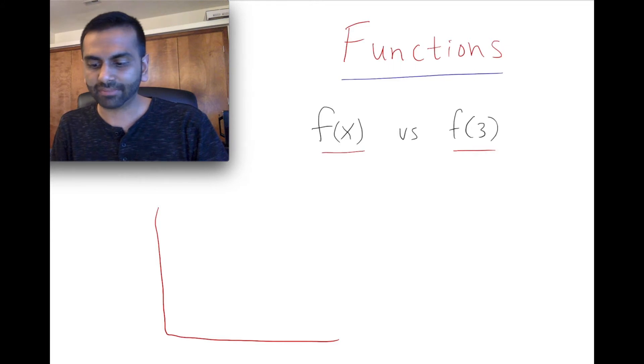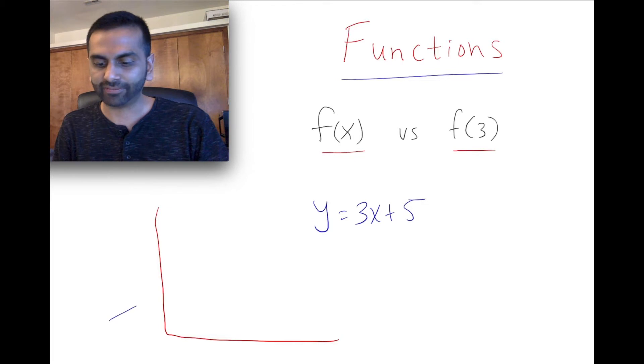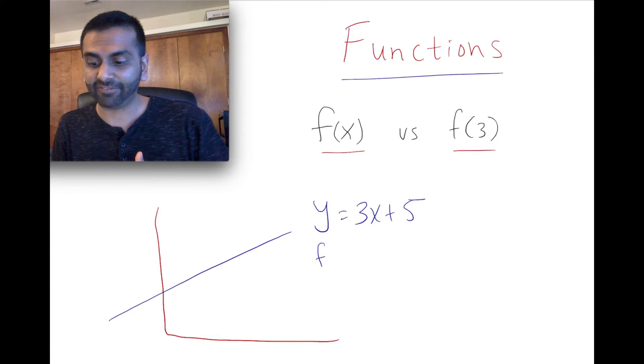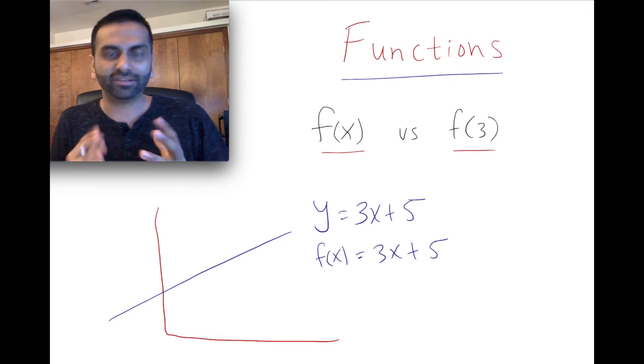When we had something like y equals 3x plus 5, and the graph looked like this, instead of y equals 3x plus 5, we could write it as f(x) equals 3x plus 5. So here's what it's saying. So here then, if we write it like that, here's what this f(x), this function, is really representing.